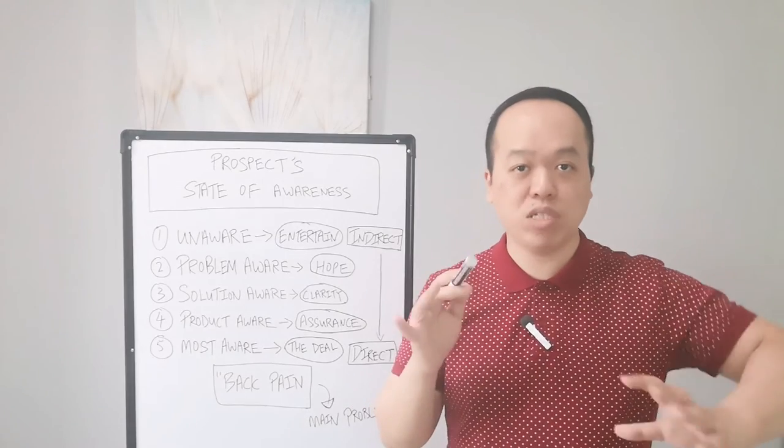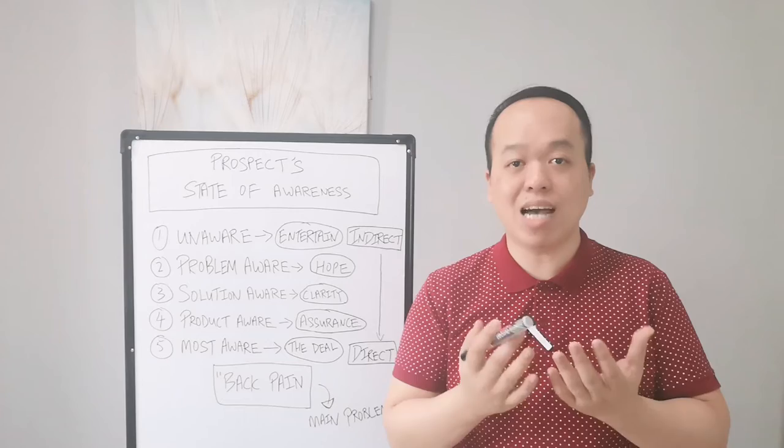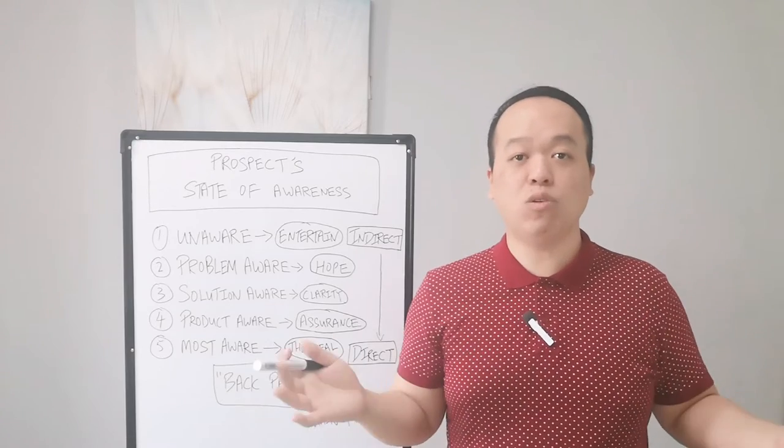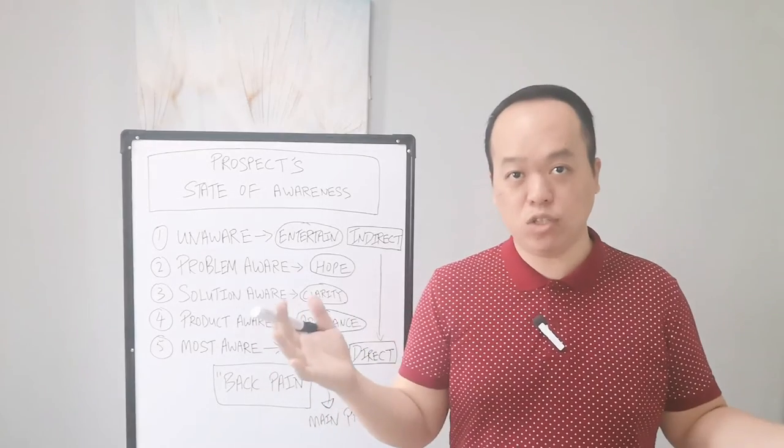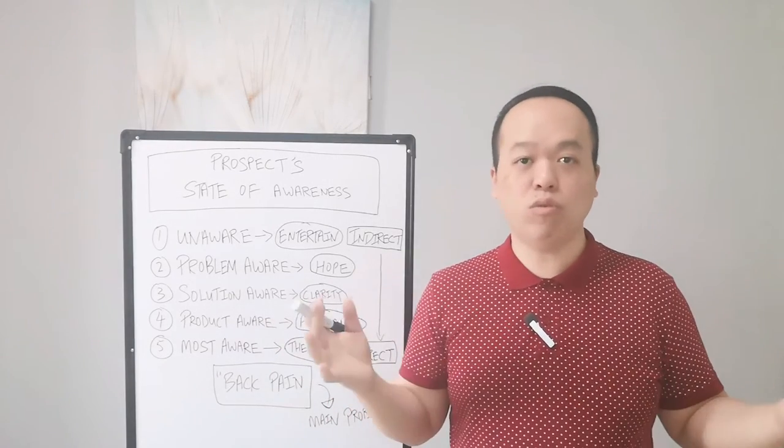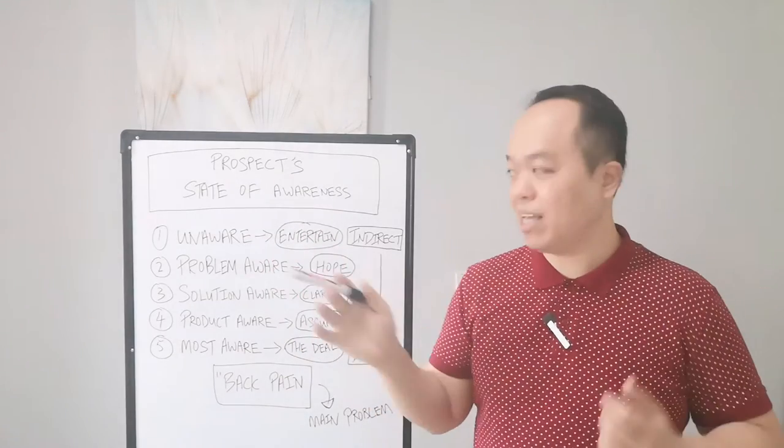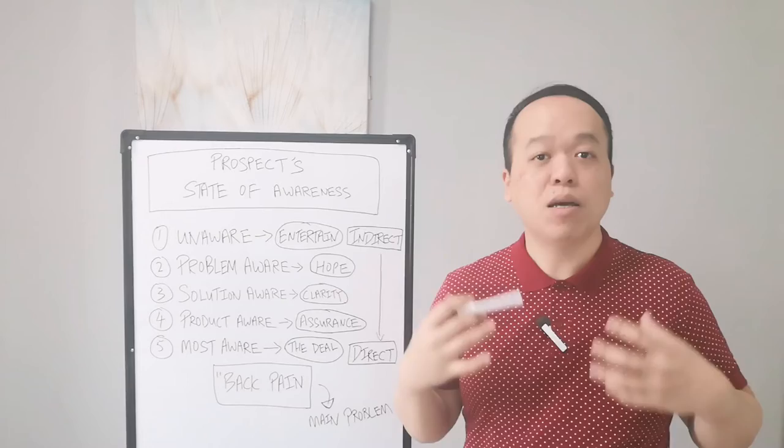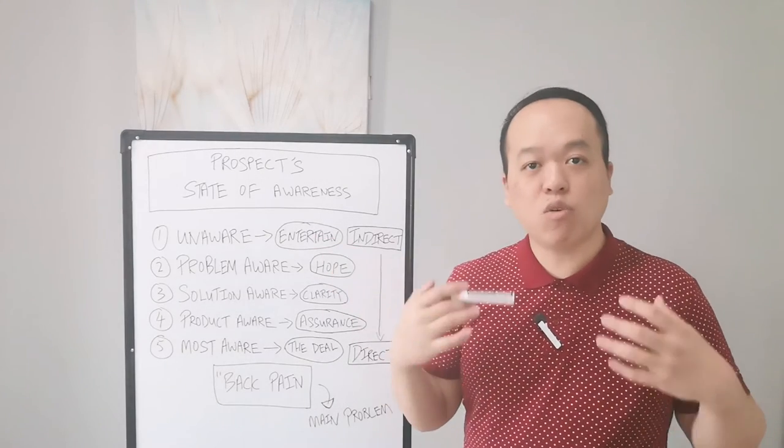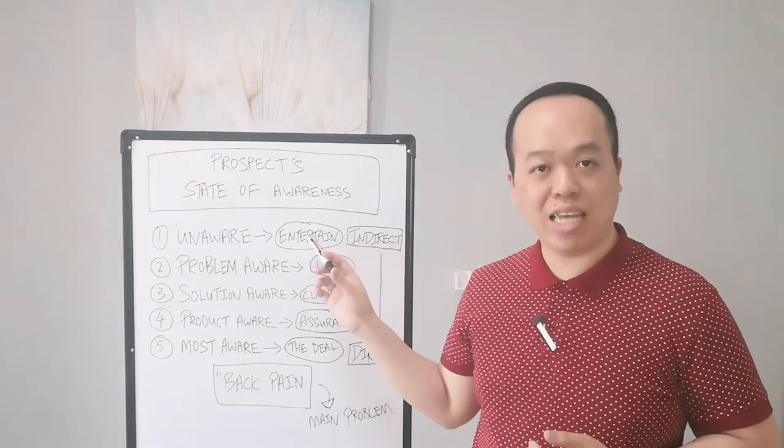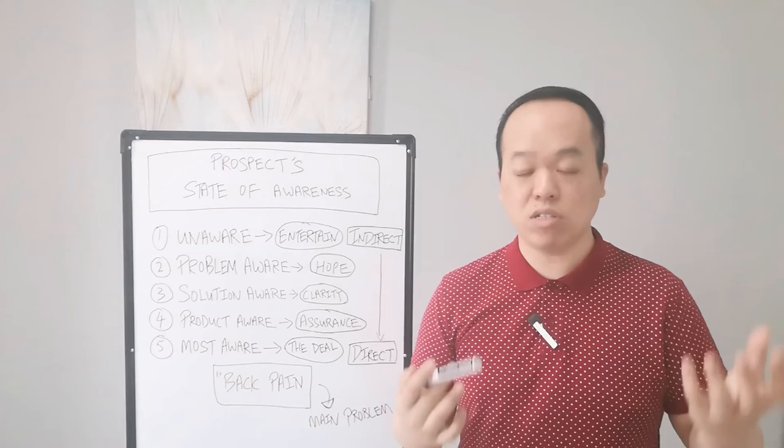In stage number one, the unaware stage, this is the most difficult stage to target because this group of audience does not know that they have a potential back pain problem in their old age, or they don't even know there's a solution. They're totally unaware that yoga can help solve their back pain problem in the future. What you need to do is craft a message to entertain them in terms of having a good story to tell about...